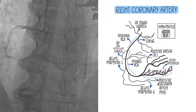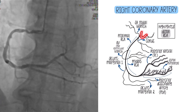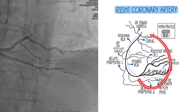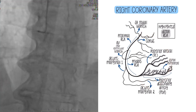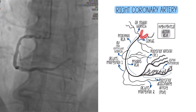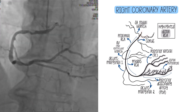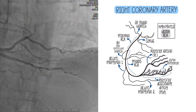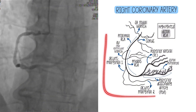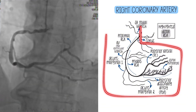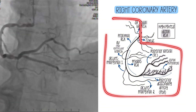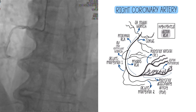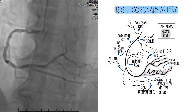Before, we talked about the cusps — the left cusp, where your LCA came off of, and then the right coronary cusp, which we haven't talked about yet. That's where the RCA comes off of. This whole structure is considered the right coronary artery, and then it has smaller branches coming off of it.